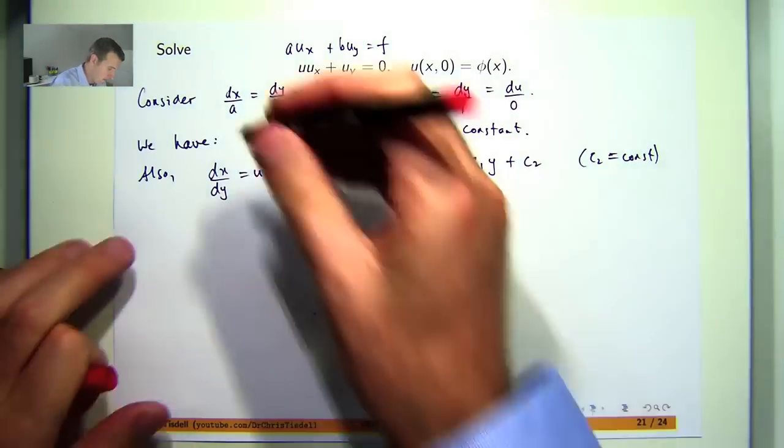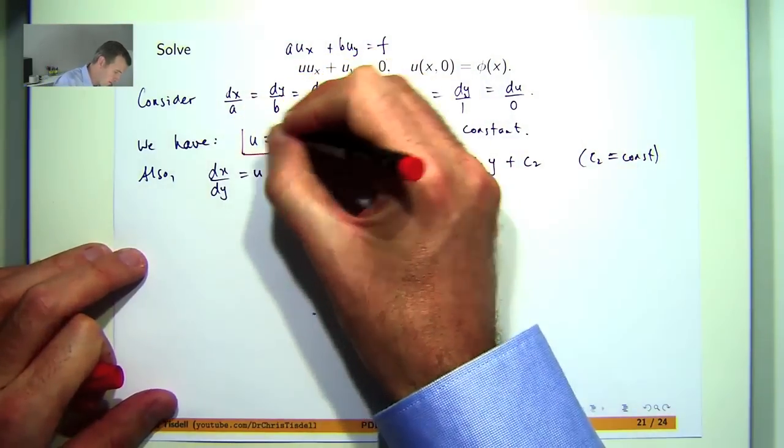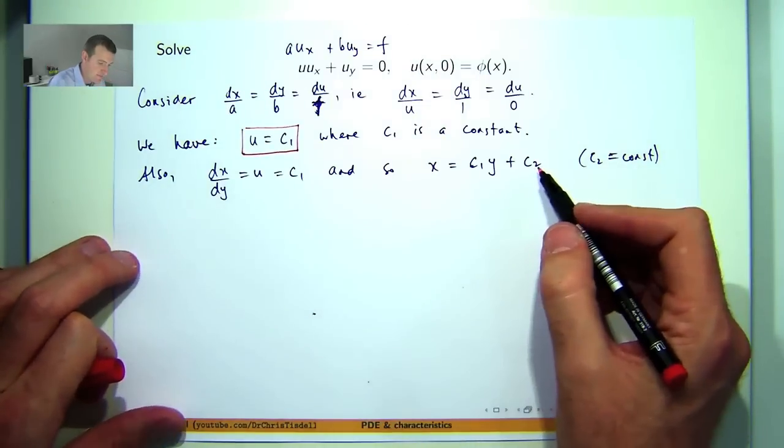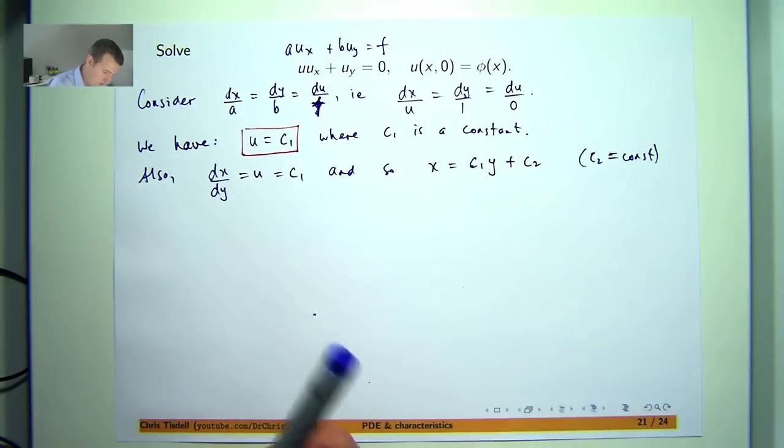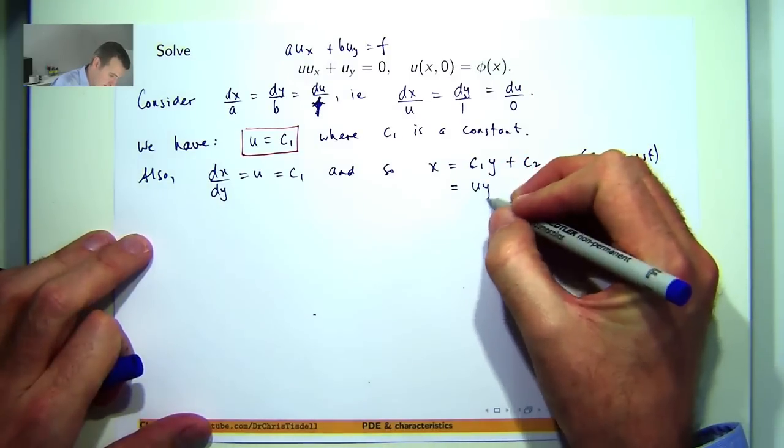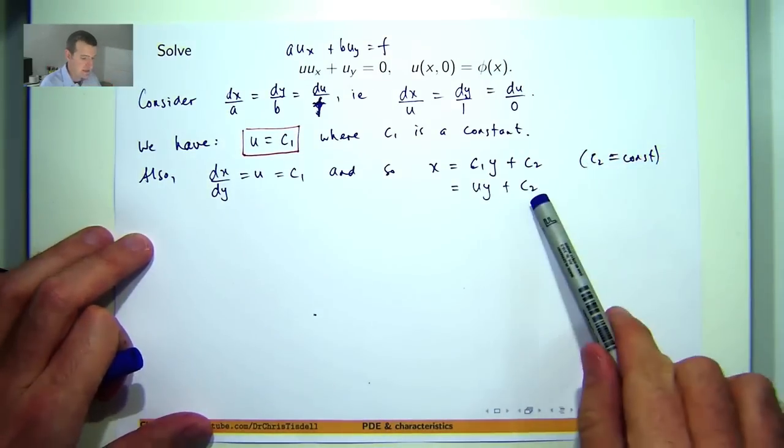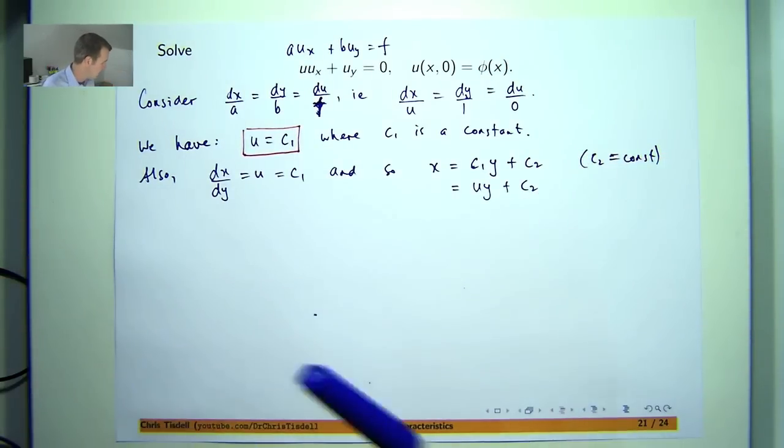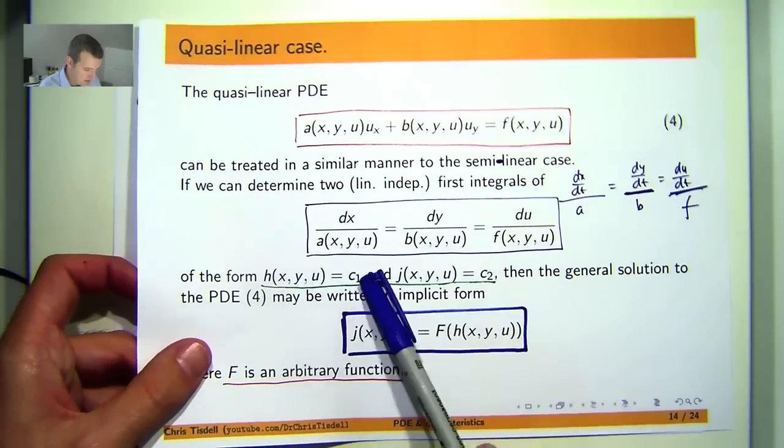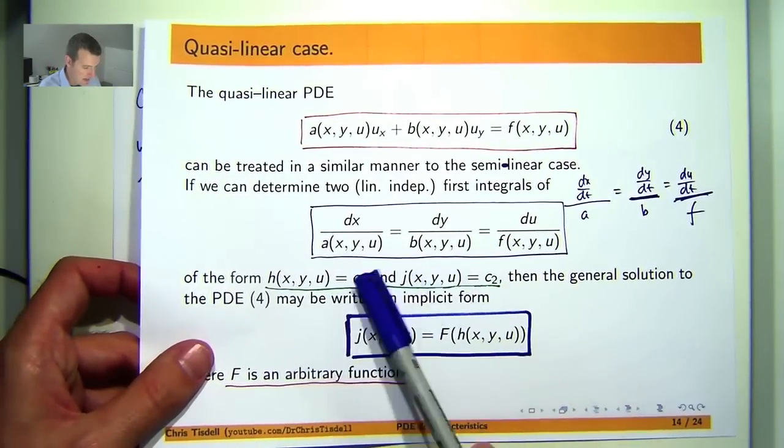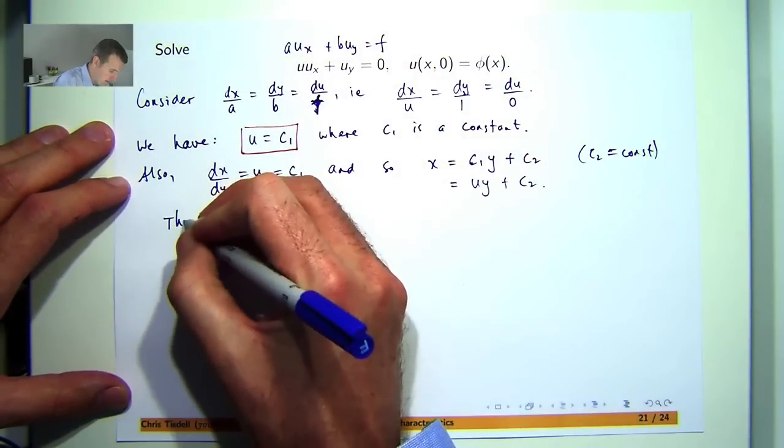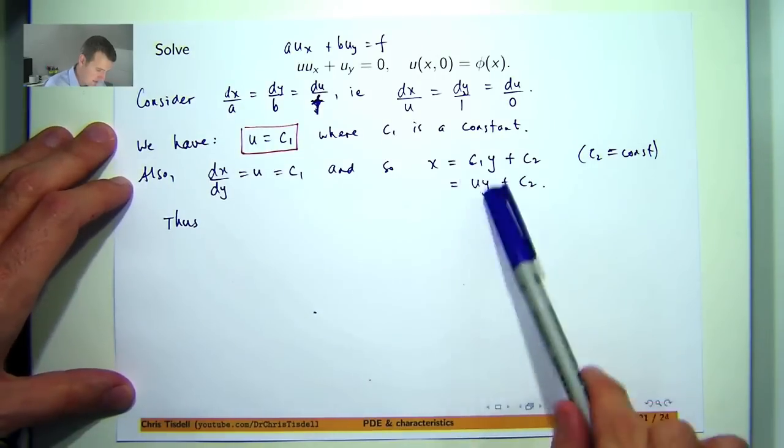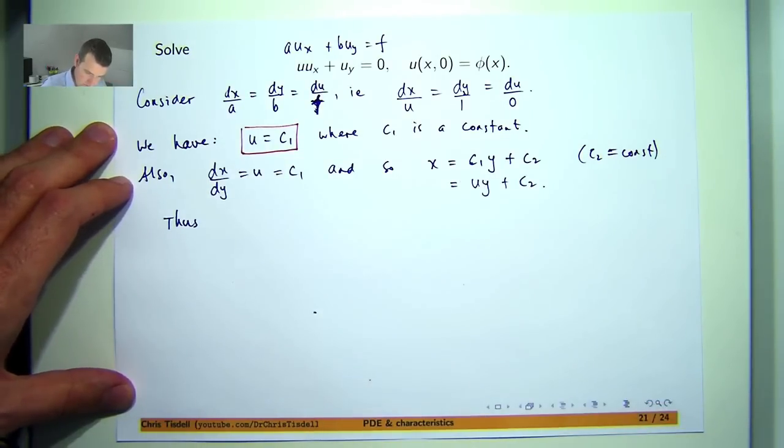So we have this expression and this expression. Now I can sort of go back now and put u in here. And what I'm going to do is isolate that c2, because remember we're looking for functions like this where the constants are isolated.